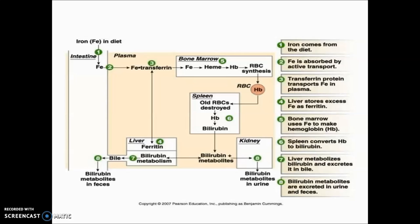This iron metabolism chart is important for exam. If there is a defect in bone marrow, hemoglobin will not form properly. If there is a defect in kidney, bilirubin metabolites will accumulate in the body. Around seven to eight questions can be made from this chart.